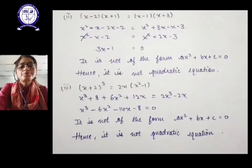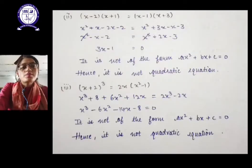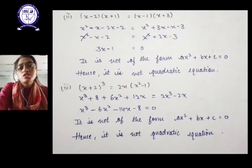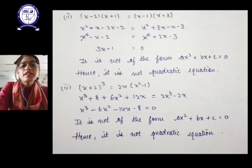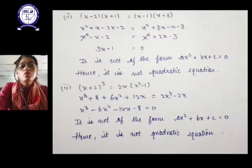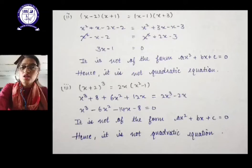Taking the next example: (x − 2)(x + 1) = (x − 1)(x + 3). After multiplying both sides, the x² terms appear on both sides and cancel each other out. We are left with 3x − 1 = 0. Since there is no term of x², and the highest degree is 1, it is a linear equation — not a quadratic equation.